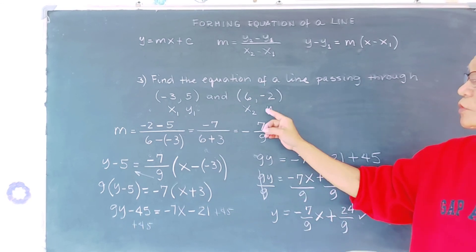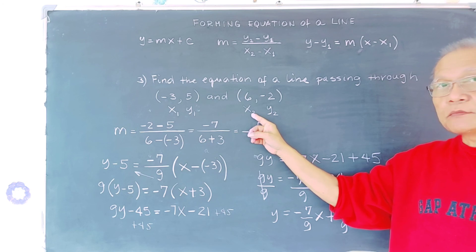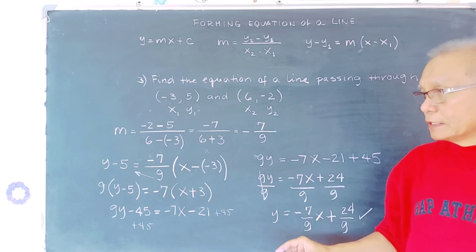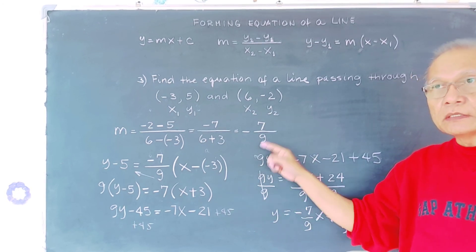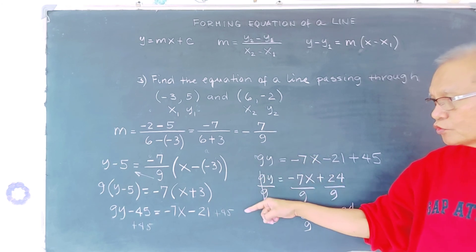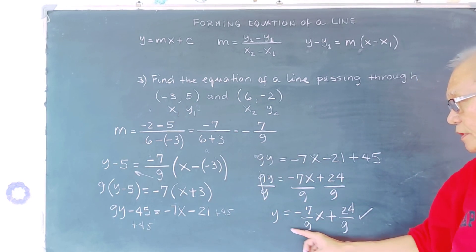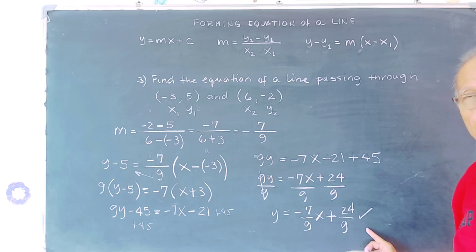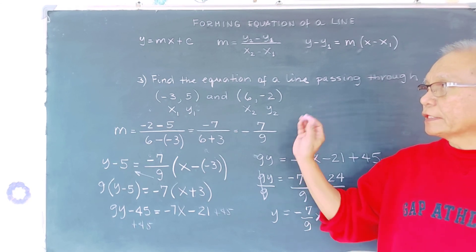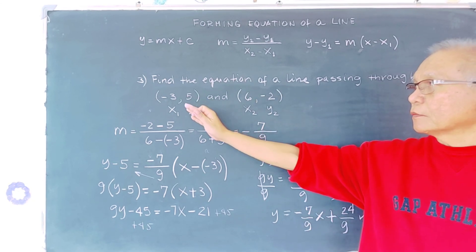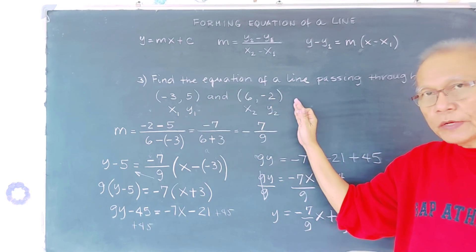If you use (6, −2) as your x₁, y₁ instead, follow the same process and you will arrive at the same equation. You choose only one point — either (−3, 5) or (6, −2) — as your x₁, y₁. Both choices give the same final equation.